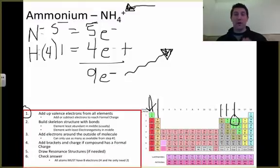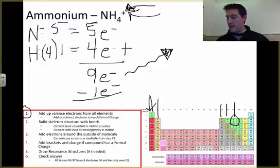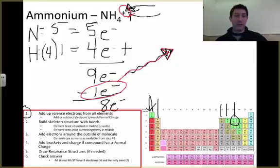So I need to get rid of one of my electrons to account for this positive up here, and that means I only have eight electrons to build my structure with. This is really important right here: because of this overall positive charge, I had to get rid of an electron. We'll look at what happens if that's a negative charge in just a minute.